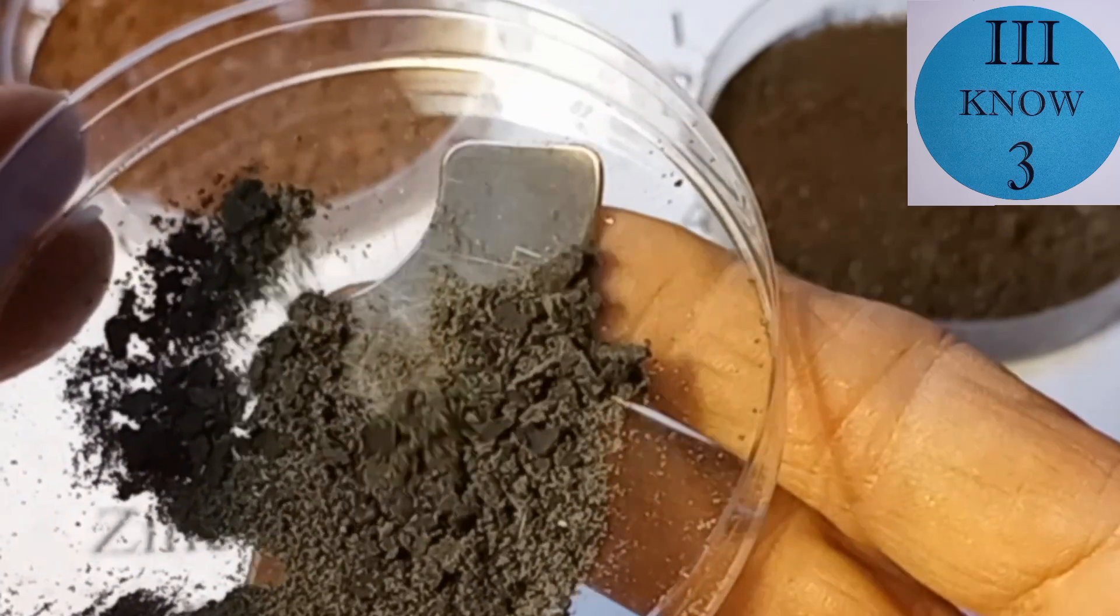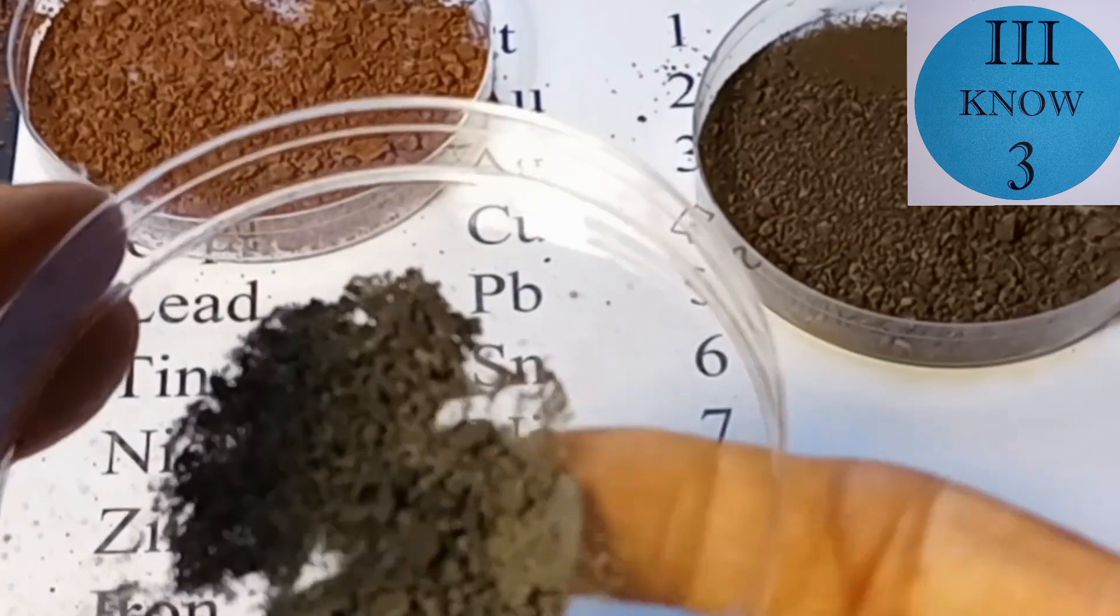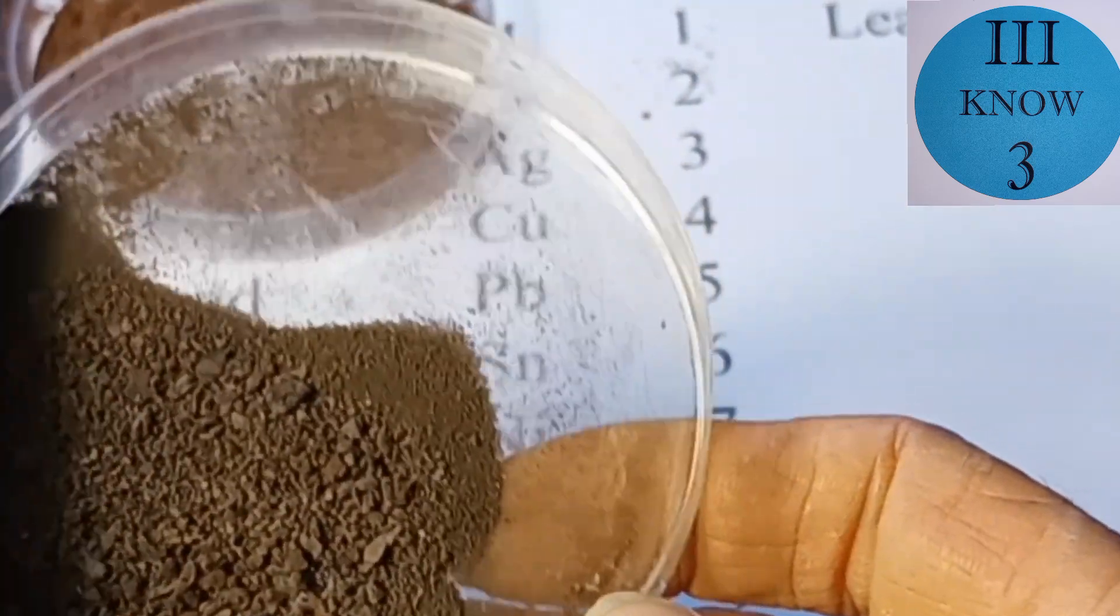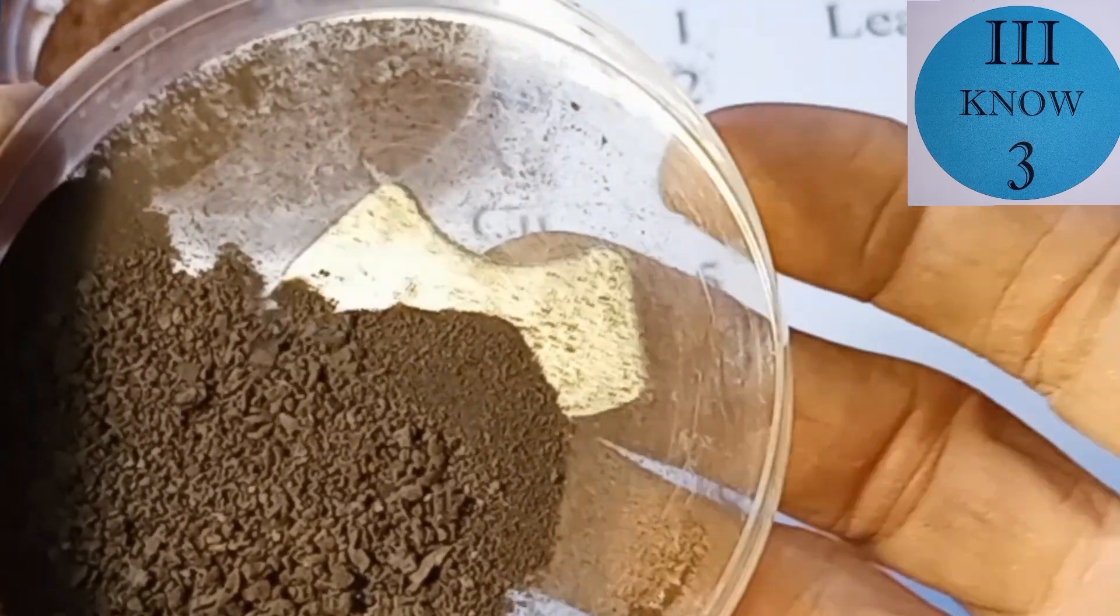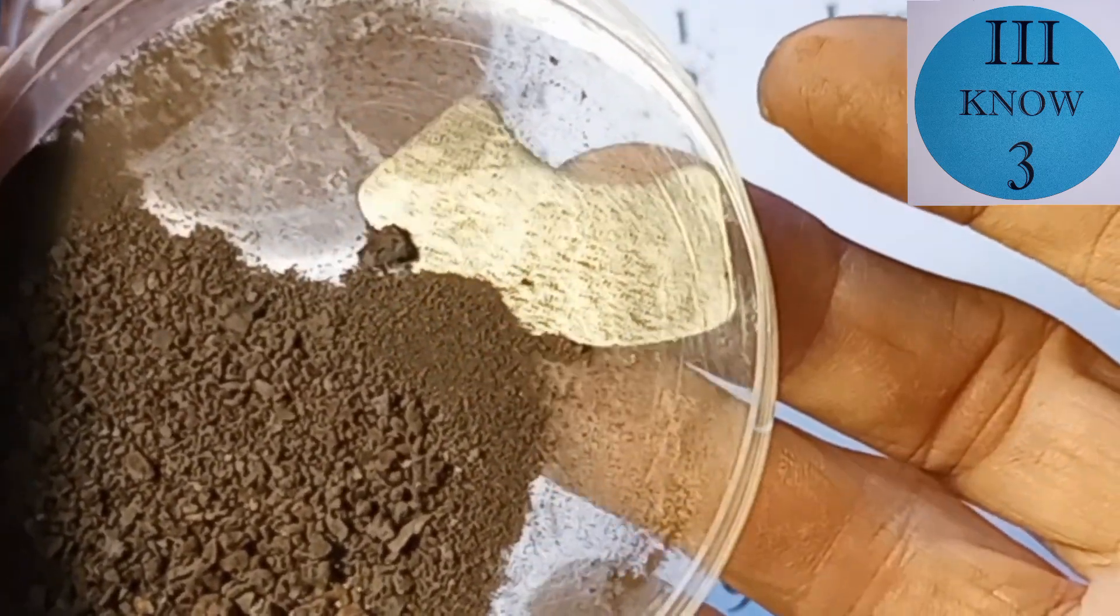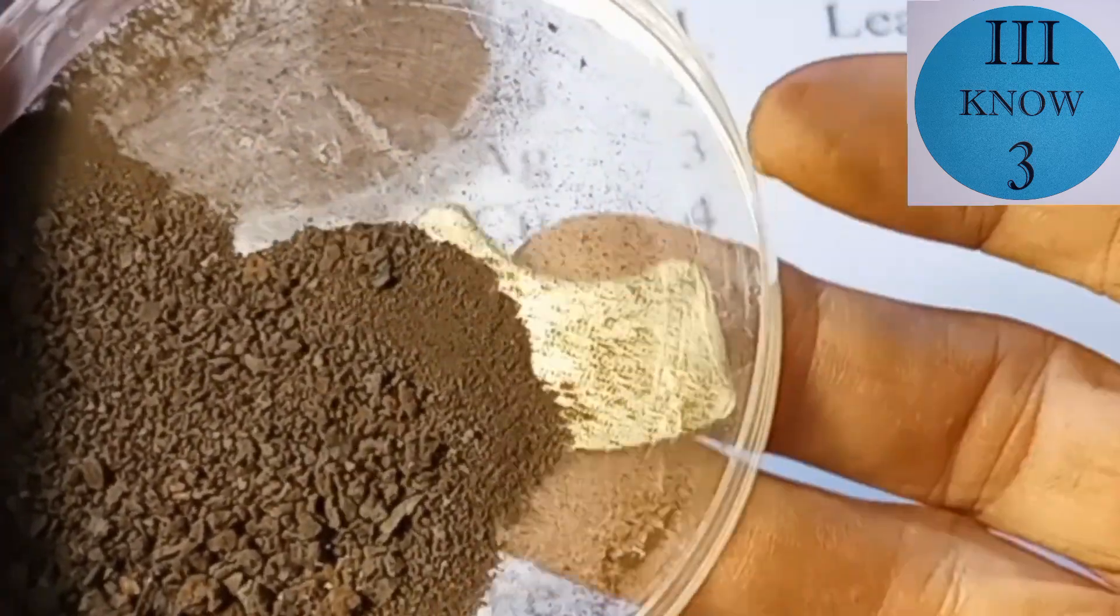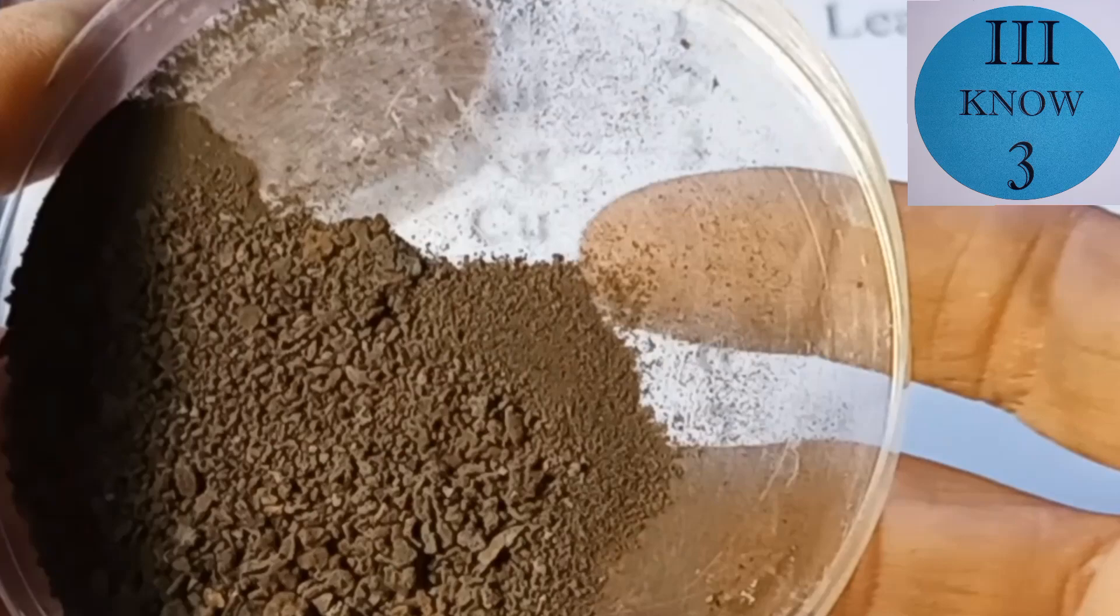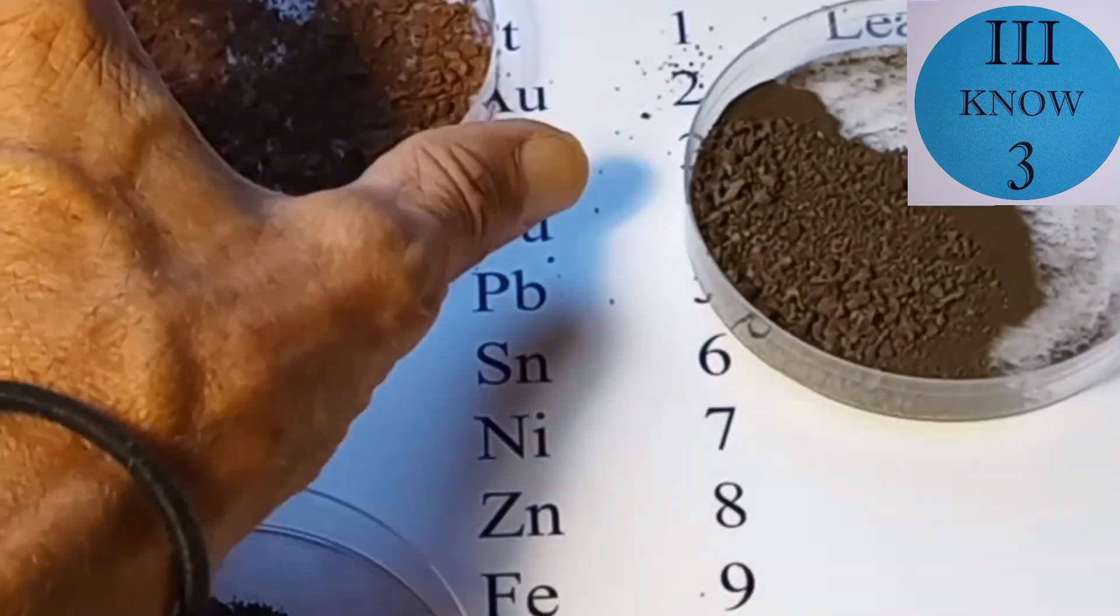This next sample is what precipitated out after the original copper was removed and although you can see it looks like copper you can also tell there's some nickel in it because some of it is following the magnet around.